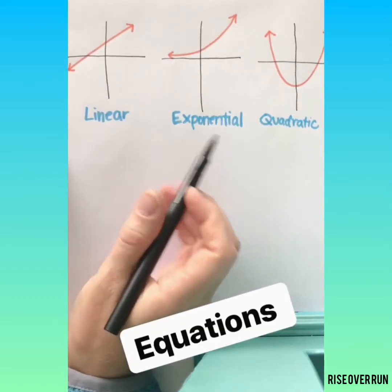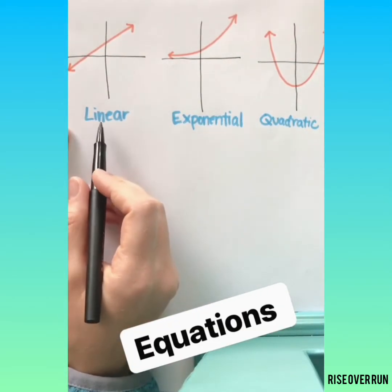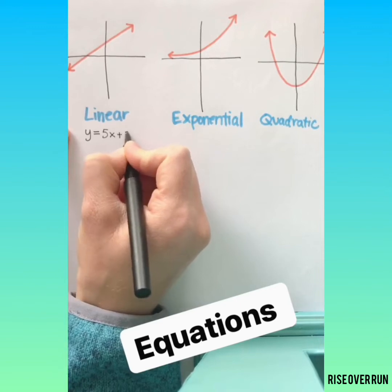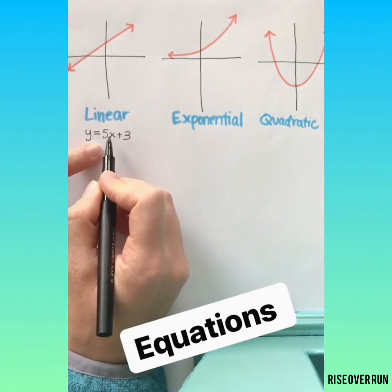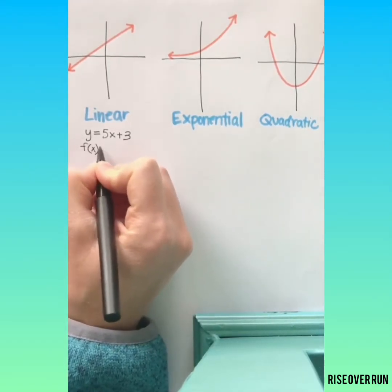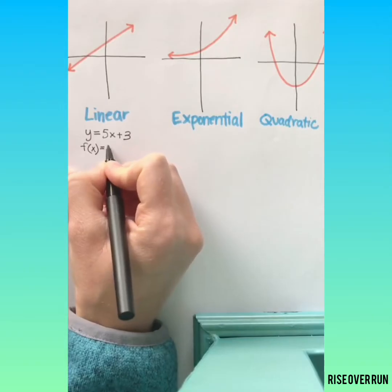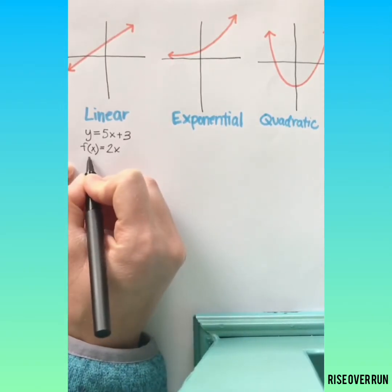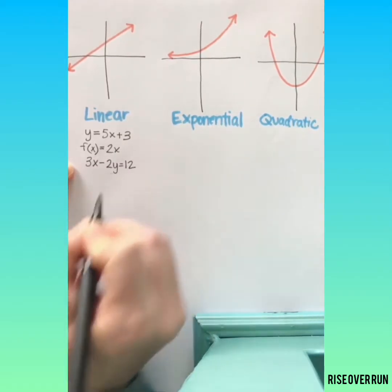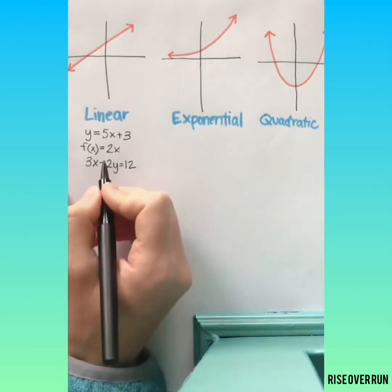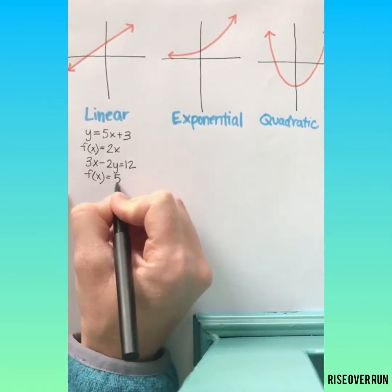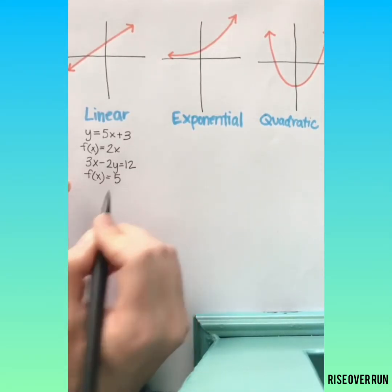Now let's think about what the equations will look like. For linear equations, you'll typically see something like y equals 5x plus 3. You shouldn't see any exponents with the variable. You might also see equations that have f of x, just meaning it's a function. You might also see equations in standard form, something like 3x minus 2y equals 12. All of those are linear. You could even see f of x equals just a number or a constant. That too will make a linear function.